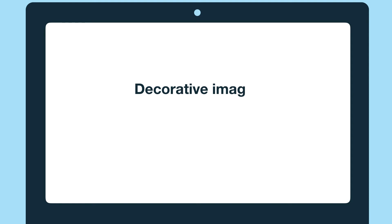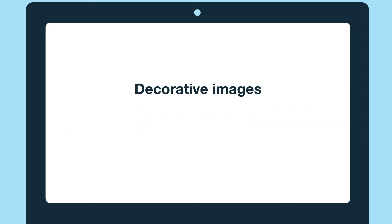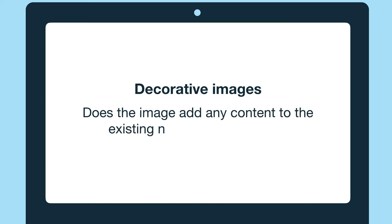The next type of images are decorative images. These don't add any content to the page. Their only purpose is visual appeal. Whether an image is decorative or not is up to the author of the page, so it's important to consider if the image is adding any content. A good way to think about it is to ask yourself if the image adds any content to the existing narrative of the page.